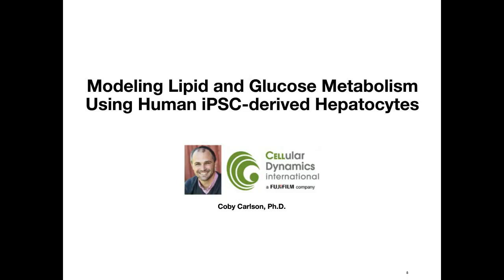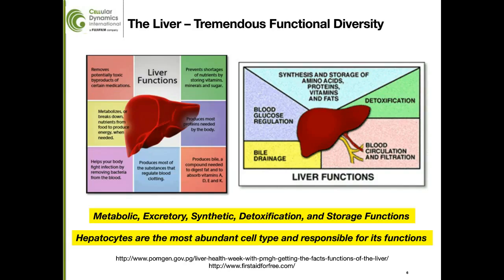I would like to start by introducing you to the liver. The liver is a vital organ that supports nearly every other organ in the body. It is estimated that there are nearly 500 different functions of the liver, ranging from controlling the levels of fats, amino acids, cholesterol, and glucose in the blood, to storing vitamins, minerals, and other essential chemicals. It also produces bile, converts food into energy, and neutralizes and destroys drugs, toxins, and infectious particles. Hepatocytes are the most abundant cell type in the liver and perform the majority of these functions.